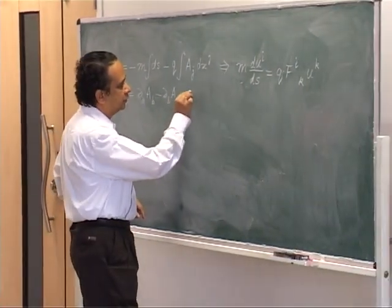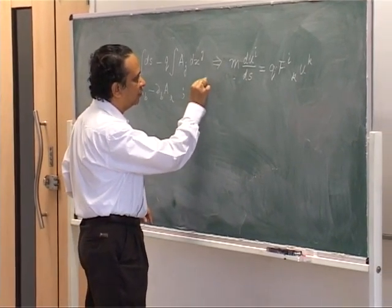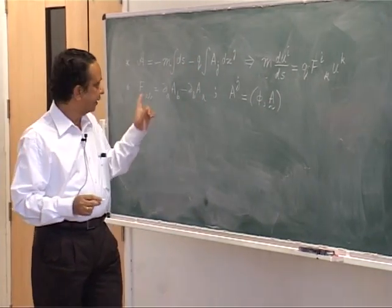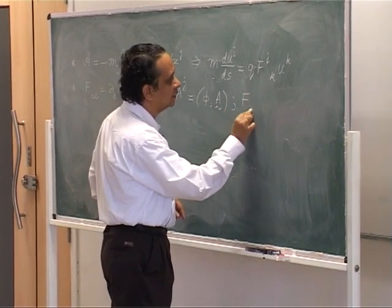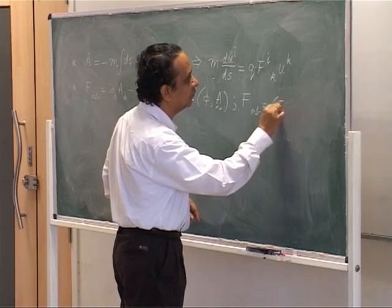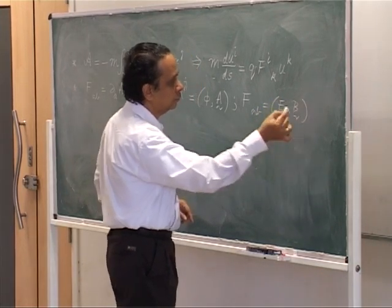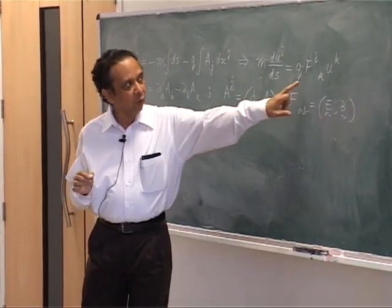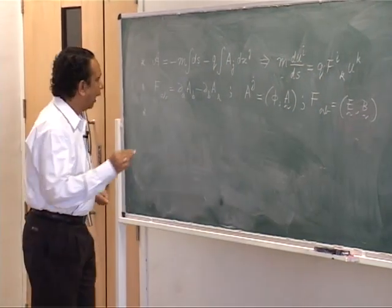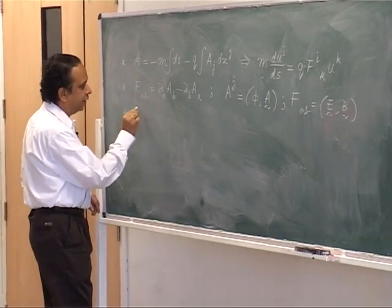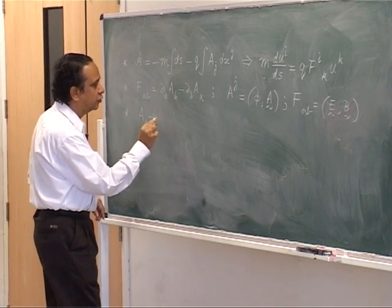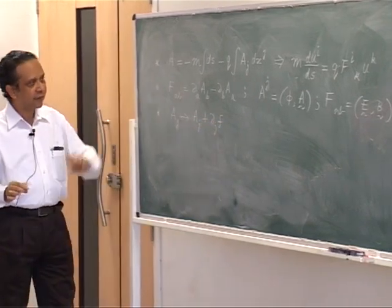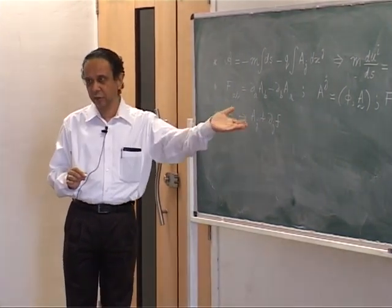This is just to remind you and get you back on track. We also found that these things are familiar from classical electrodynamics. A_j stands for the scalar potential and the vector potential. F_ab has six independent components — since it is anti-symmetric — and they can be related to the electric and magnetic fields. Furthermore, a_j is not uniquely determined by f_ab; it is possible to have a_j → a_j + d_j(f), which leaves f_ab invariant. We call this a gauge transformation.